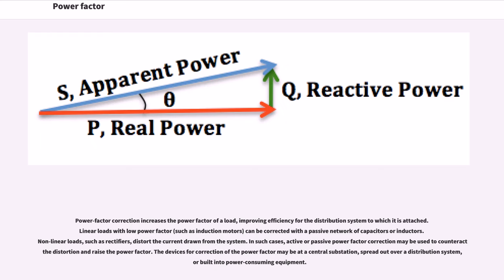Power factor correction increases the power factor of a load, improving efficiency for the distribution system to which it is attached. Linear loads with low power factor can be corrected with a passive network of capacitors or inductors. Non-linear loads, such as rectifiers, distort the current drawn from the system. In such cases, active or passive power factor correction may be used to counteract distortion and raise the power factor. The devices for correction may be at a central substation, spread out over a distribution system, or built into power-consuming equipment.